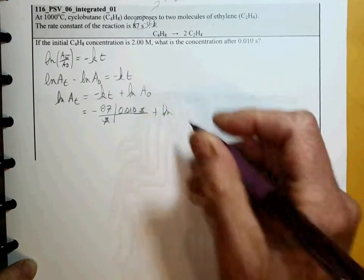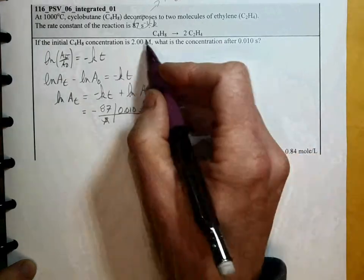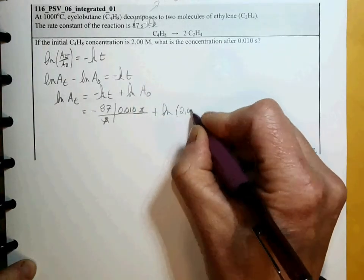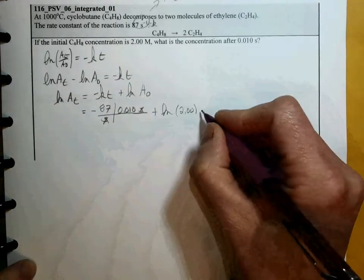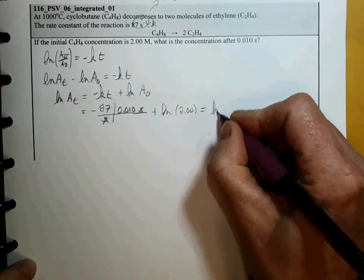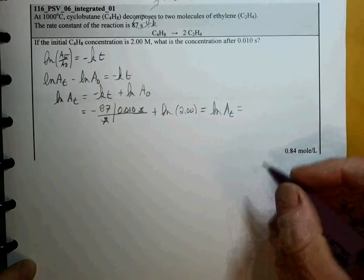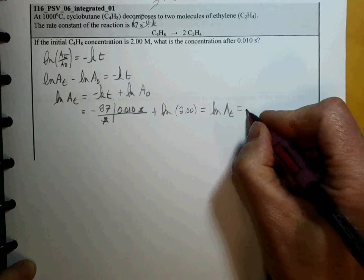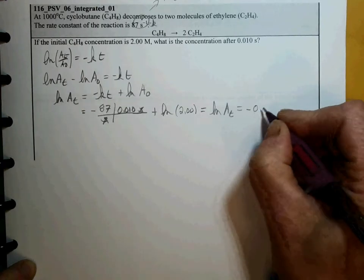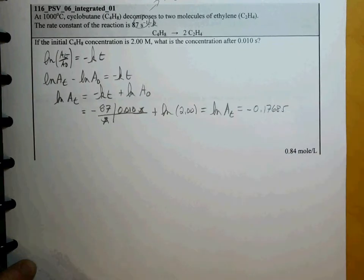A₀ is our initial concentration, the concentration at time zero, which is 2. If we calculate this out, we have that ln of the concentration at time T is equal to negative 0.17685. We carry some extra sig figs.